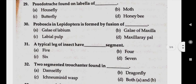Question number twenty-nine: pseudotracheae found on labella of. Answer A, housefly. Question number thirty: proboscis in Lepidoptera is formed by fusion of. Answer B, galea of maxilla.